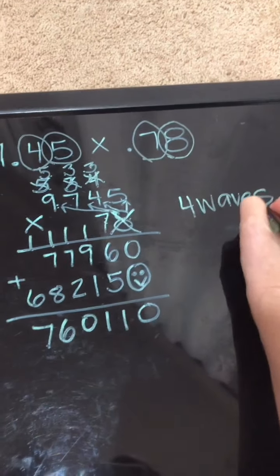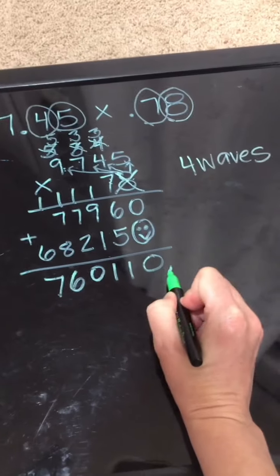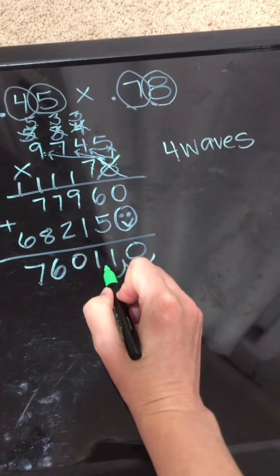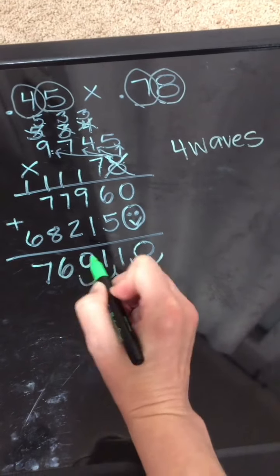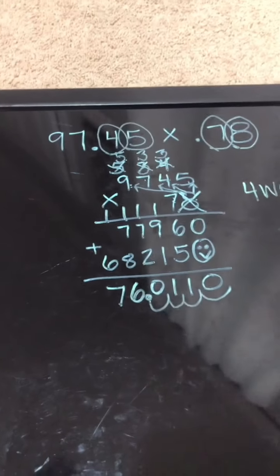So I'm going to start here and I'm going to jump 1, 2, 3, 4. My decimal would go right there.